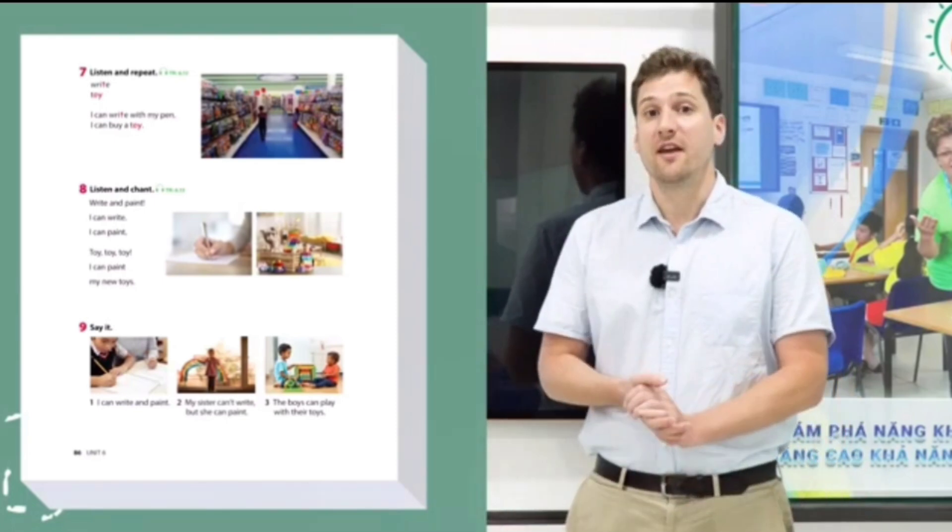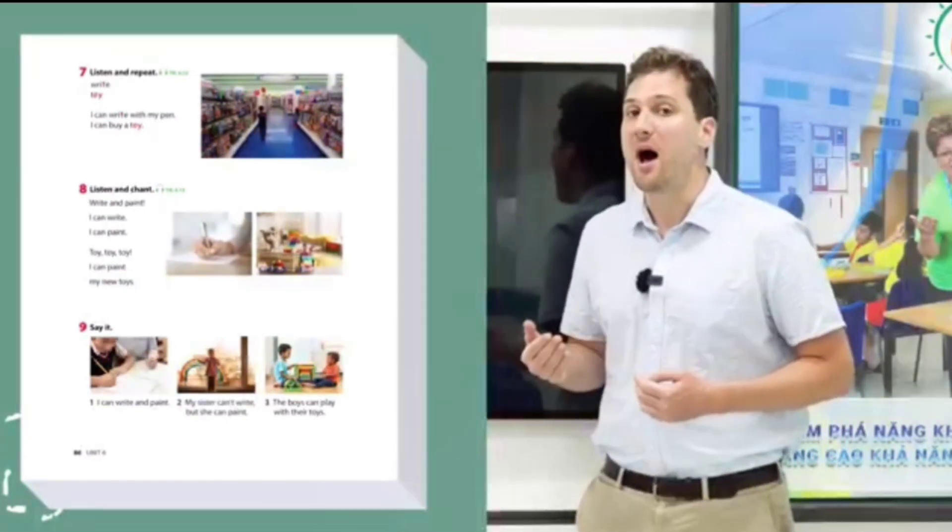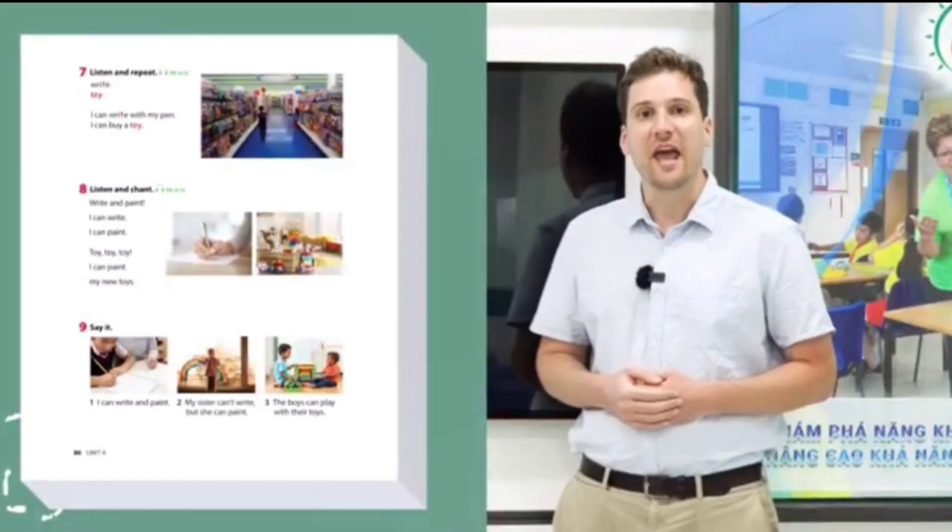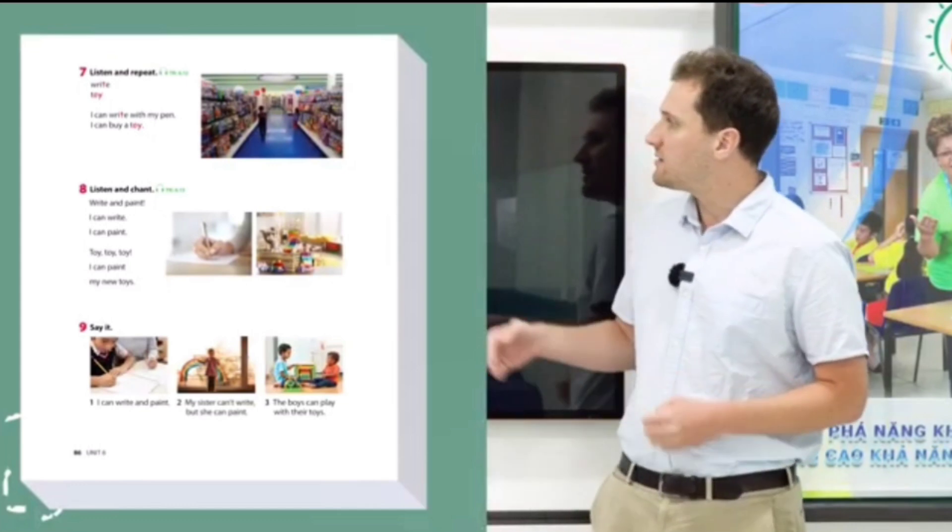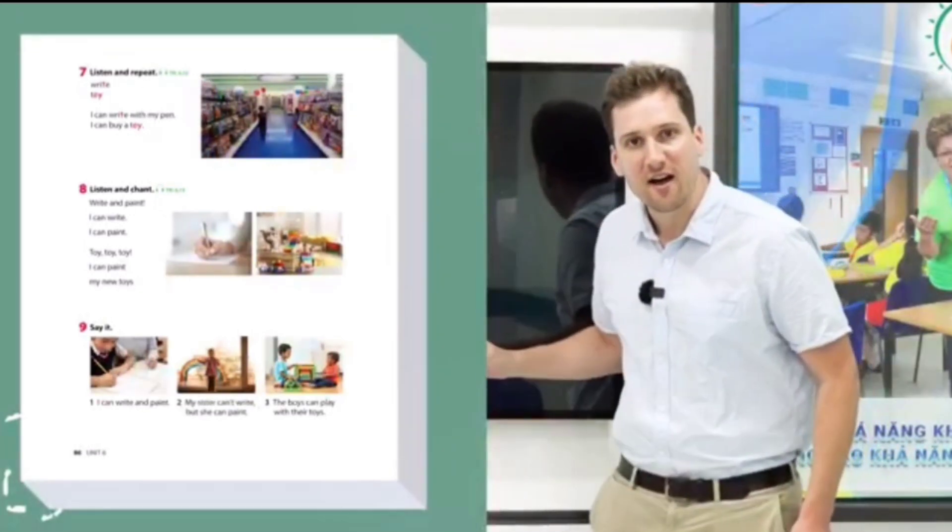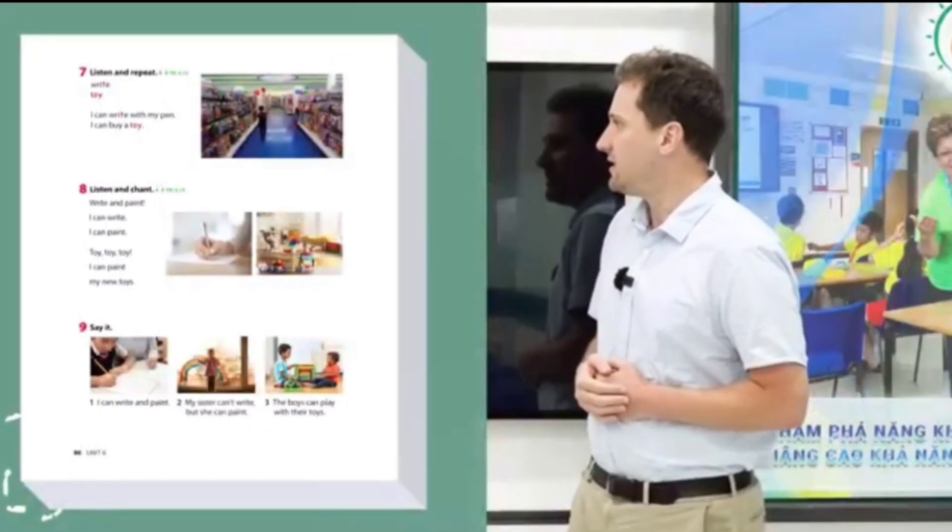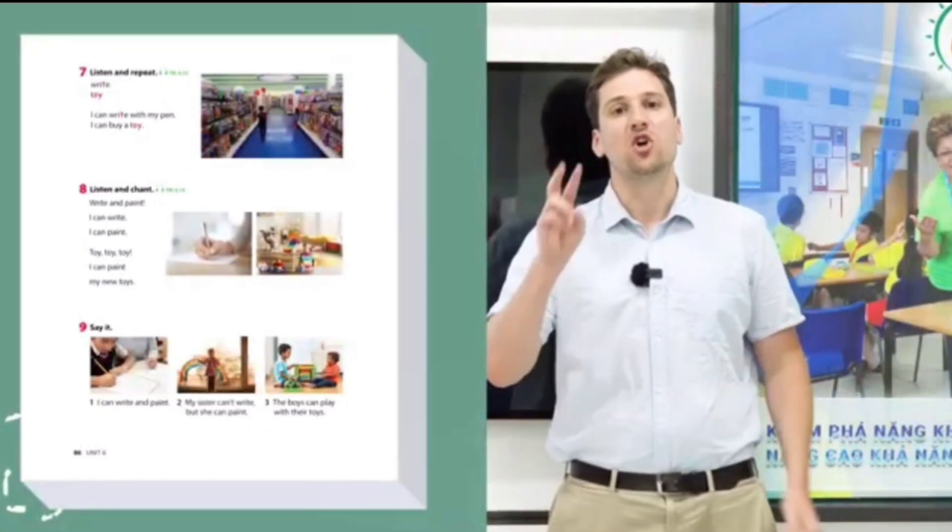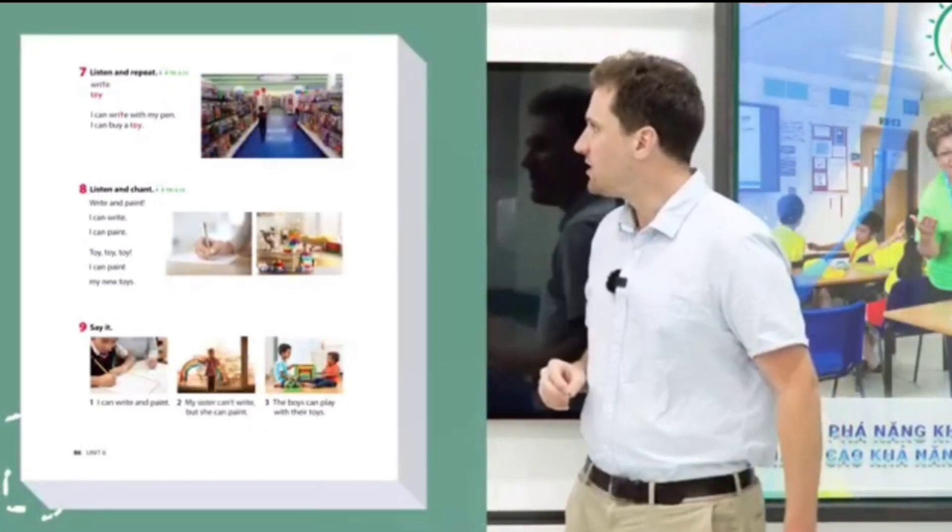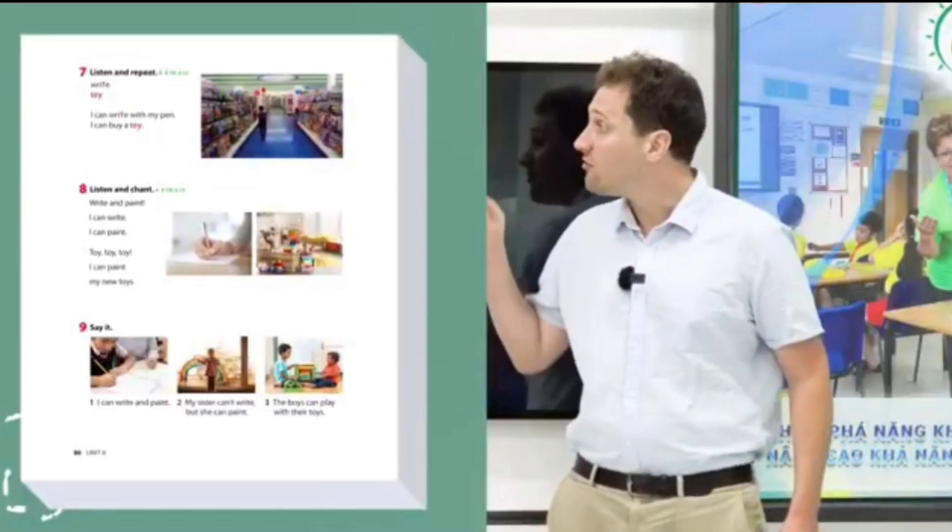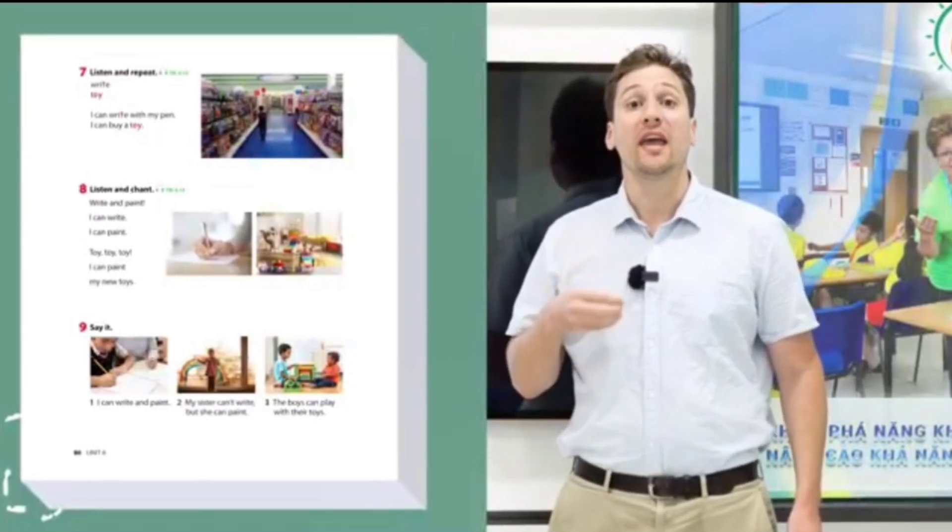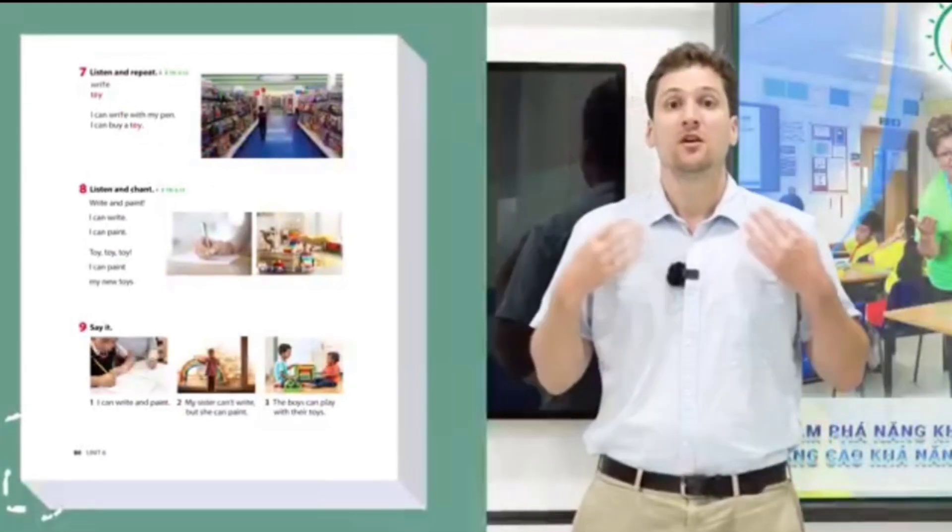This is Wonderful World Three, Unit Six, My Hobby, page 86, exercises 7, 8, and 9. This exercise is a phonics lesson, so we're going to focus on two phonetic sounds: the 'i' in 'write' and the 'oi' in 'toy'.